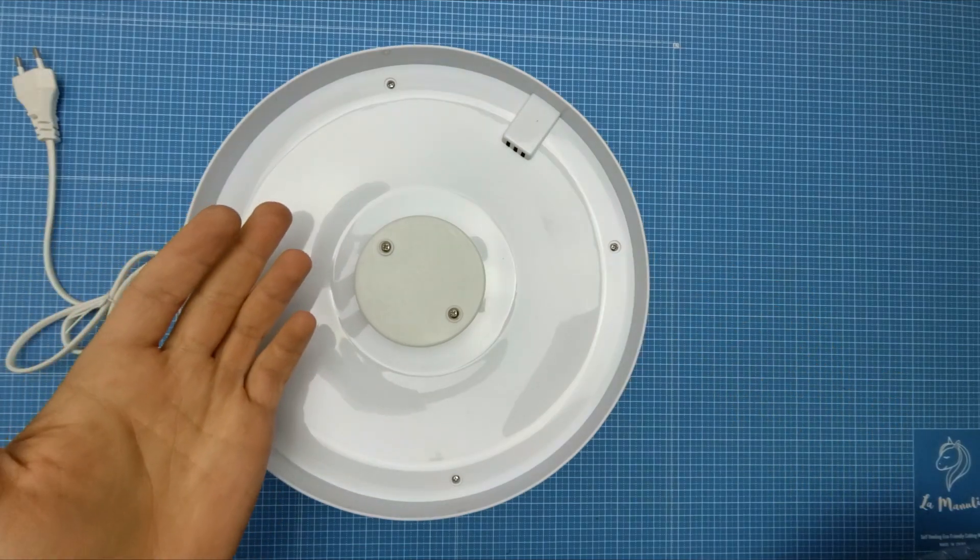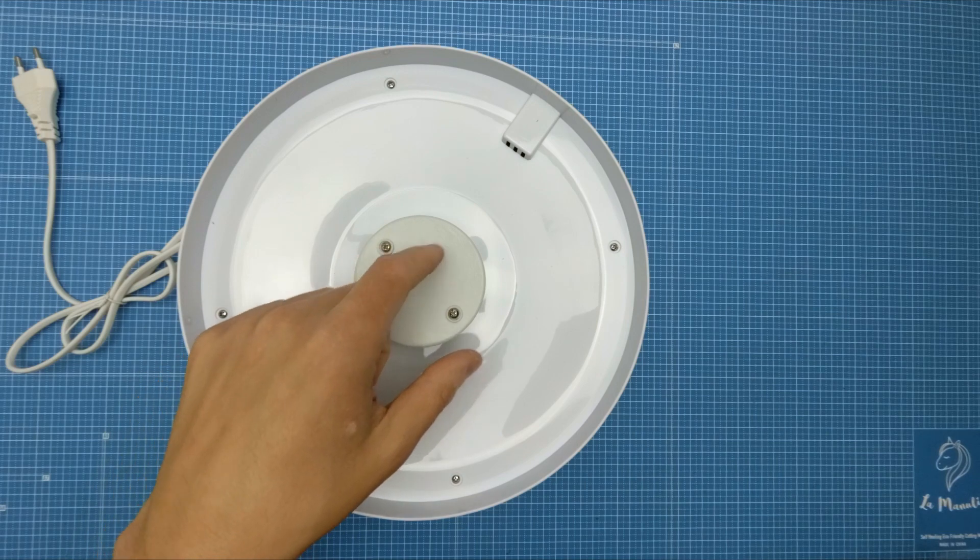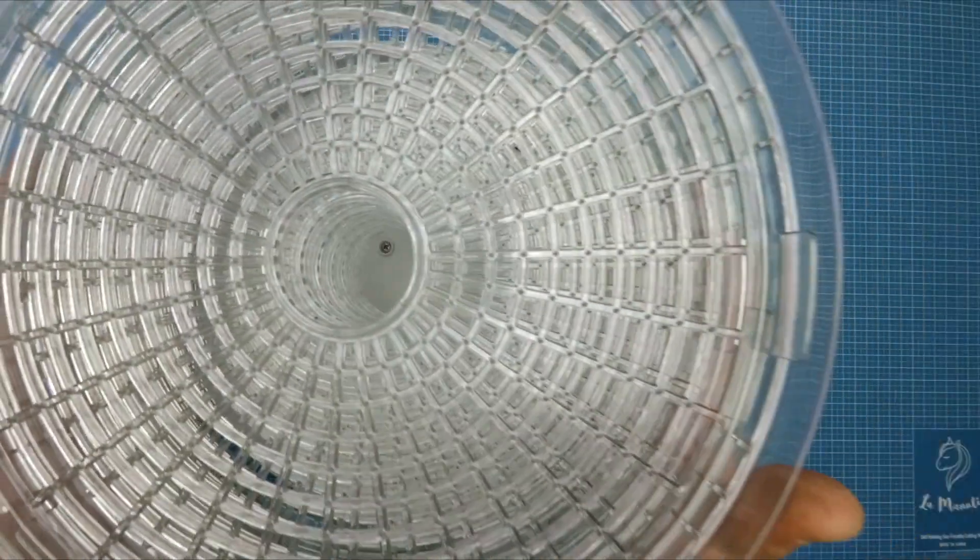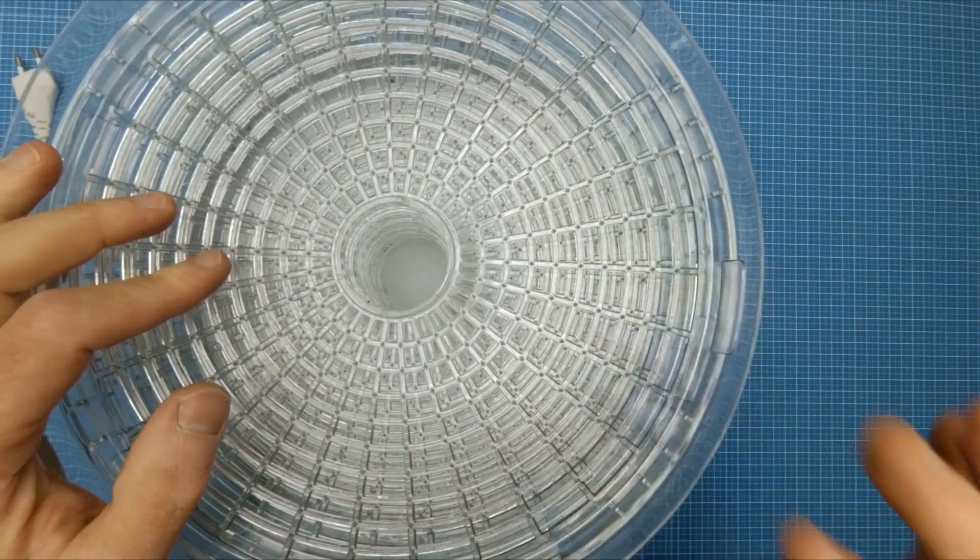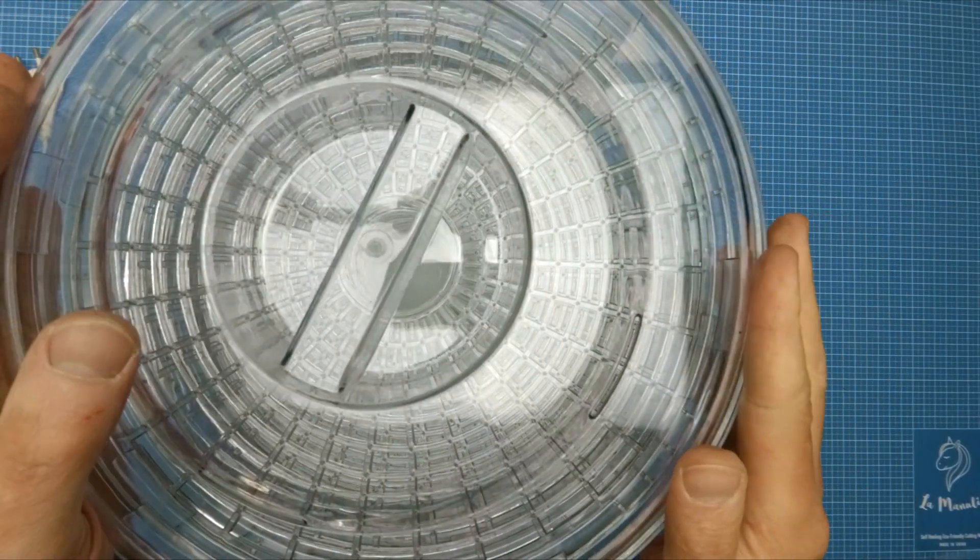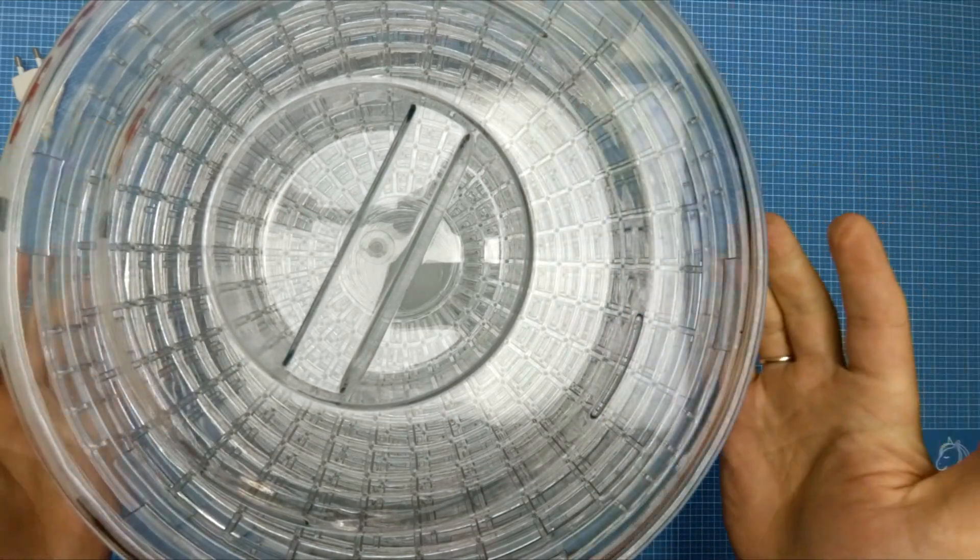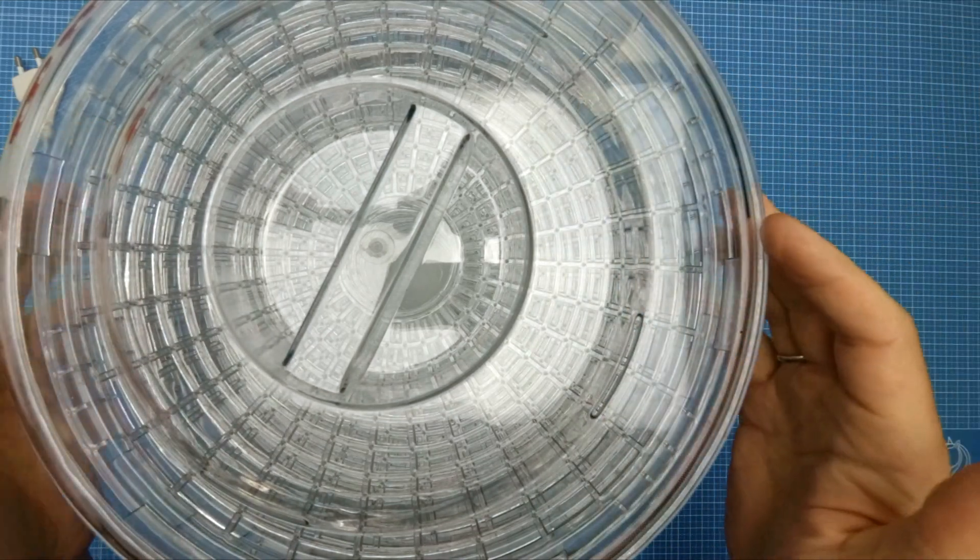The foot dehydrator consists of three parts. The base part which contains the heating element and the fan. The plates where you put all the food and obviously the cover. And the important thing about the cover is that there are holes and the moisture can just go out.